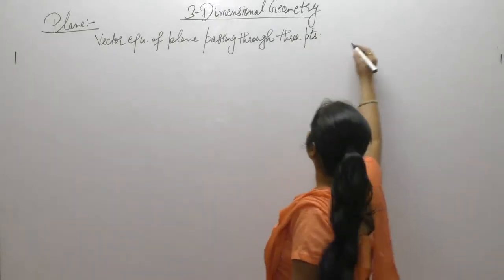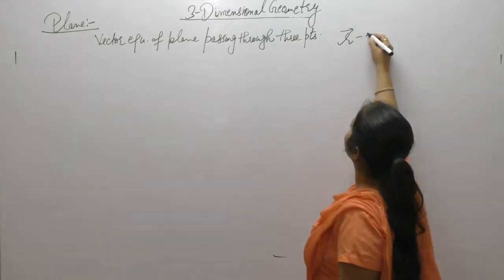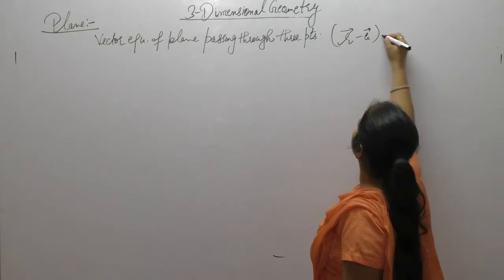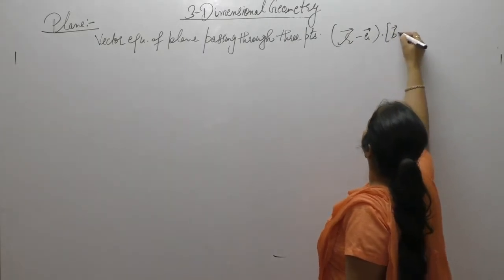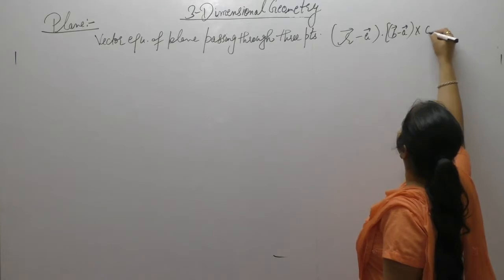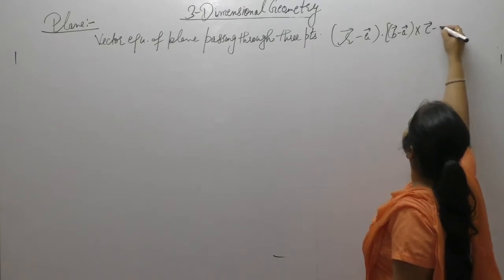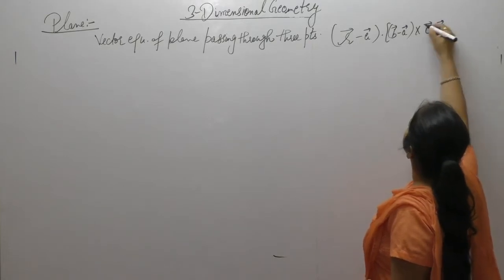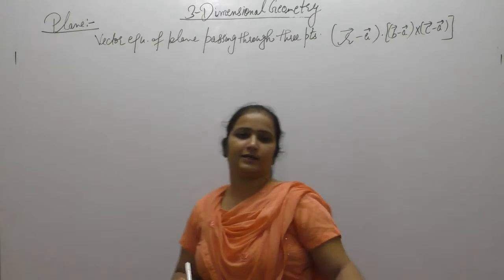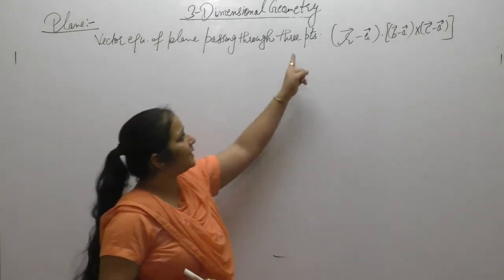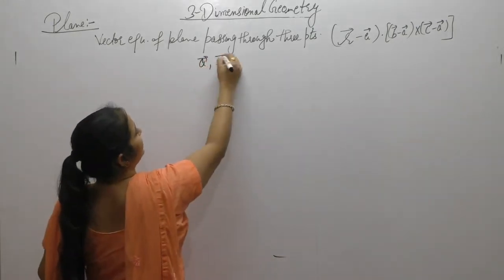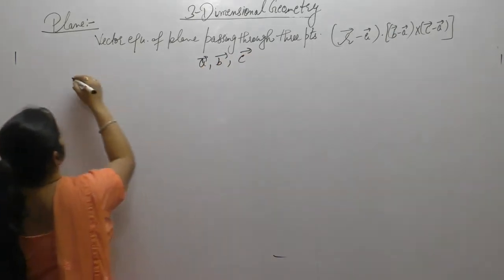The vector equation of a plane is: (R vector minus A vector) dot [(B vector minus A vector) cross product with (C vector minus A vector)] = 0, where the 3 points have position vectors A, B, and C.